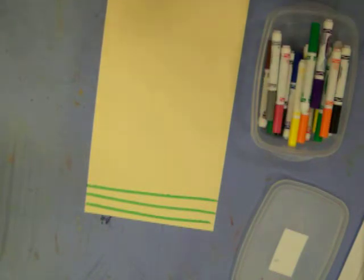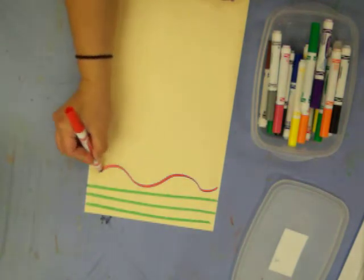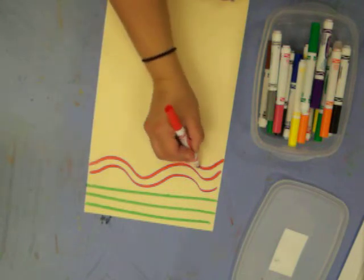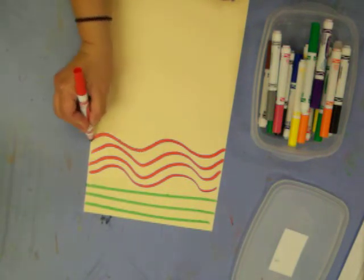And I think I'm going to do red. I'm going to make a wavy line. I'm going to make a couple of wavy lines right next to each other. Because I like wavy lines. I'll make three of those. Maybe I'll make four.